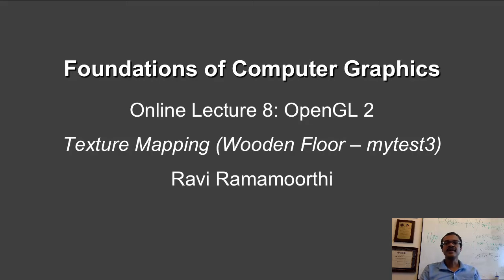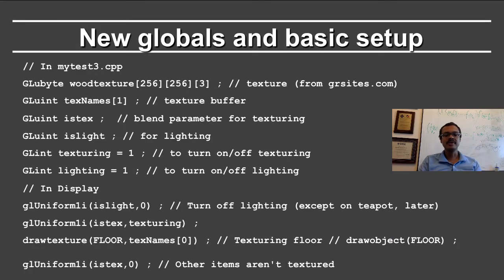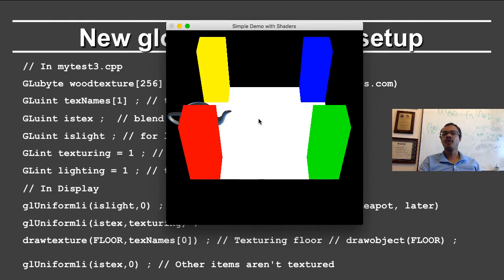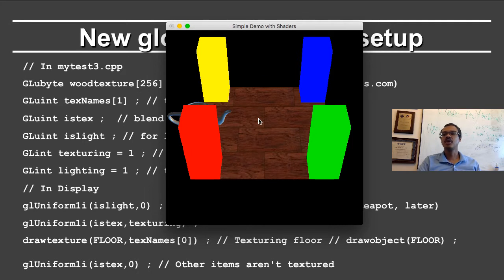In this final segment on OpenGL, we will be talking about texture mapping. We will add a texture of wood to the wooden floor in order to make the MyTest demo more interesting. This segment will correspond to the MyTest 3 program. The only change is that the floor, instead of being white, now has a wood texture. I can toggle the texture on and off using the T key.